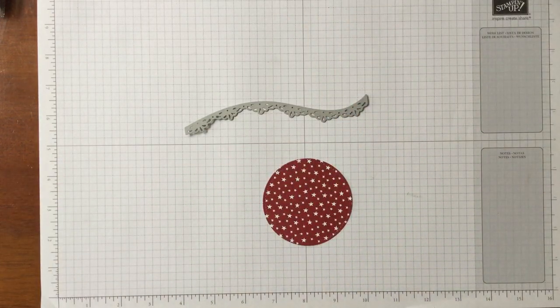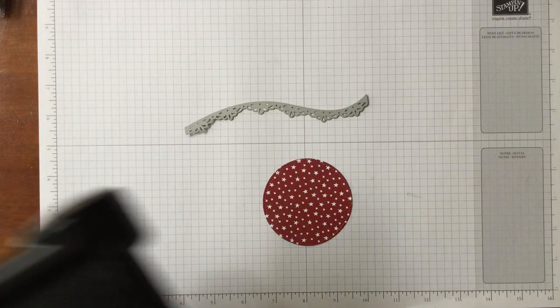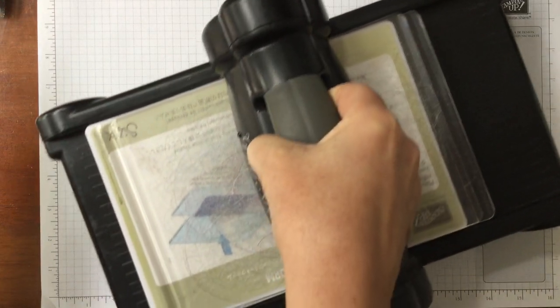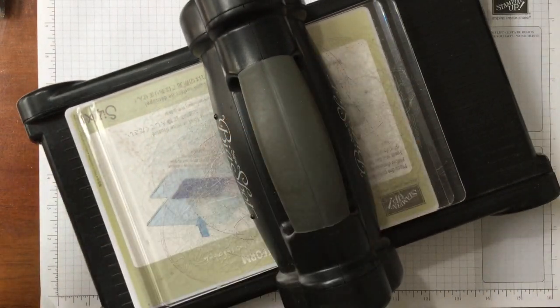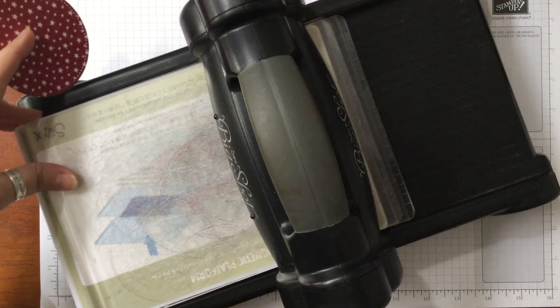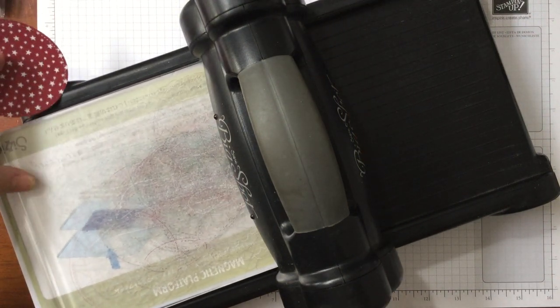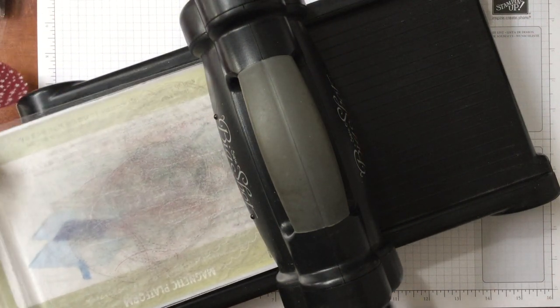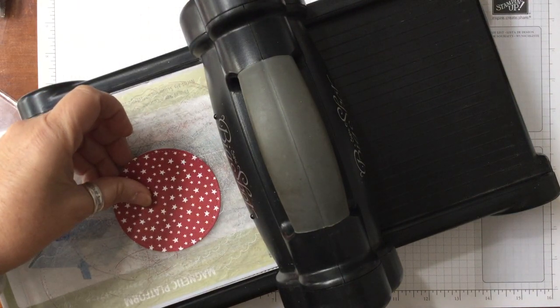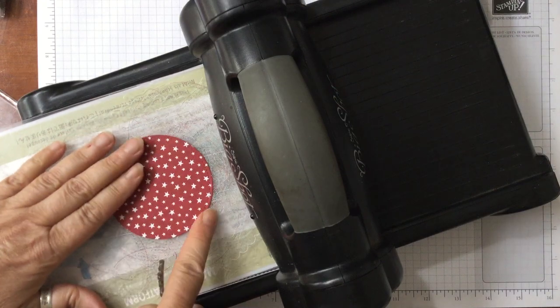Let me get my die cutting machine out and let's hopefully get it in position so that you can see it. So we are going to place the shape down.